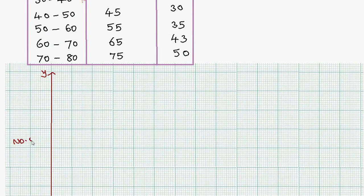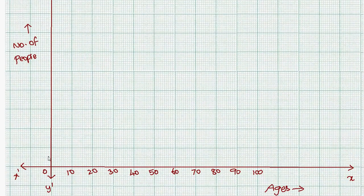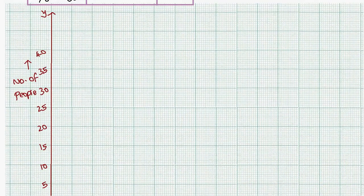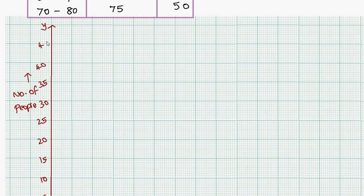On the y-axis, we mark the number of people. Using five units per interval, we mark: 0, 5, 10, 15, 20, 25, 30, 35, 40, 45, and 50 as the maximum value.